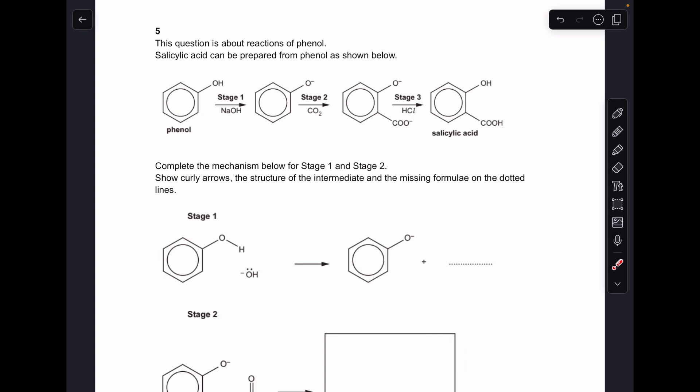Okay, so let's make a start. We've got the flow chart for the conversion of phenol to salicylic acid in three stages. We've got to focus on stages one and two.